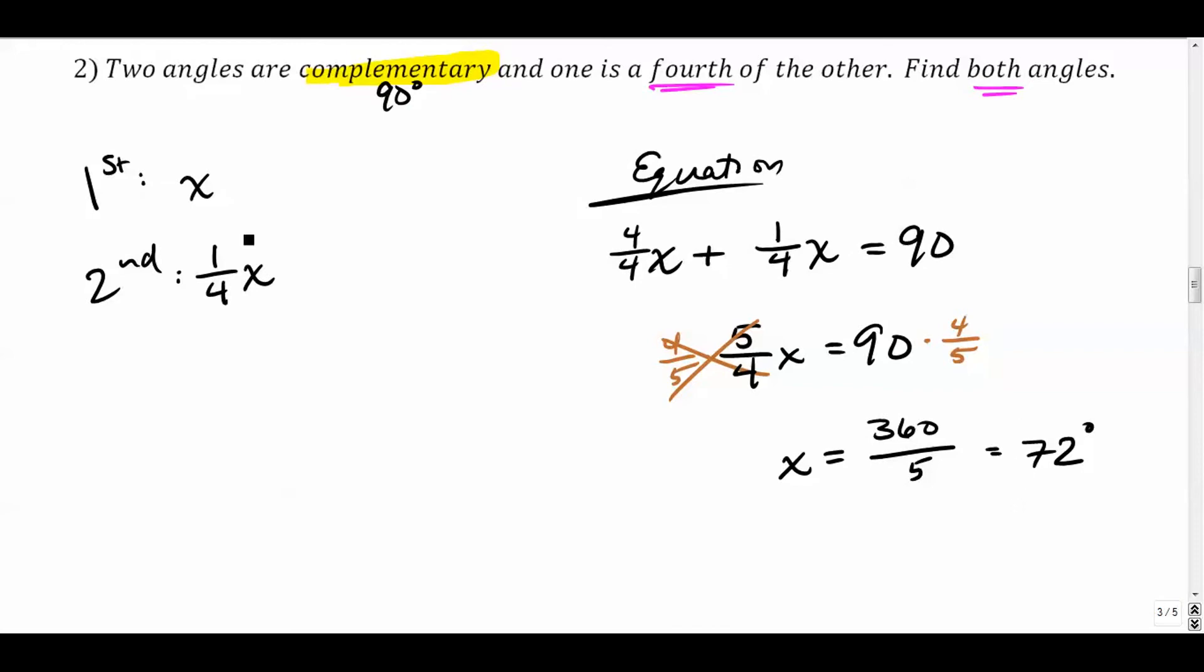72, so that's the first angle. 72, and the second one is a fourth of that. So it's a fourth of 72. Well, a fourth of 72, it's 72 divided by 4, so it's 18 degrees. And that makes sense because these two should add up to 90 degrees, and they do. 72 plus 18 is 90.